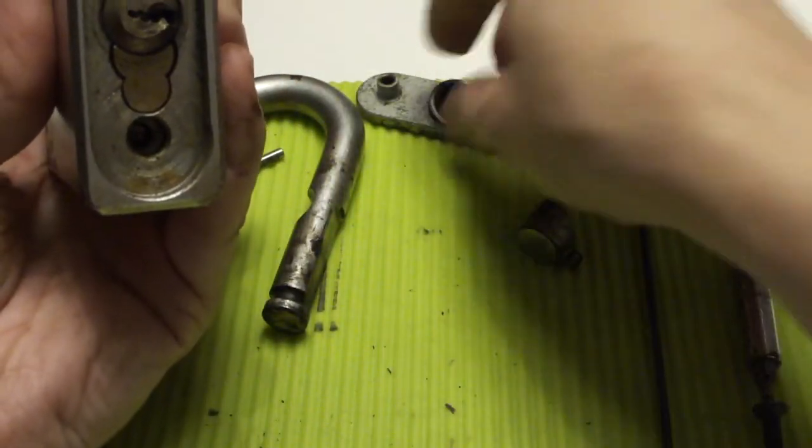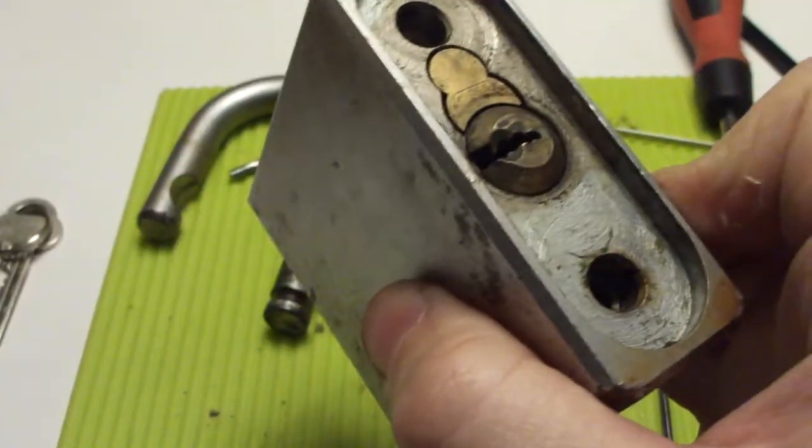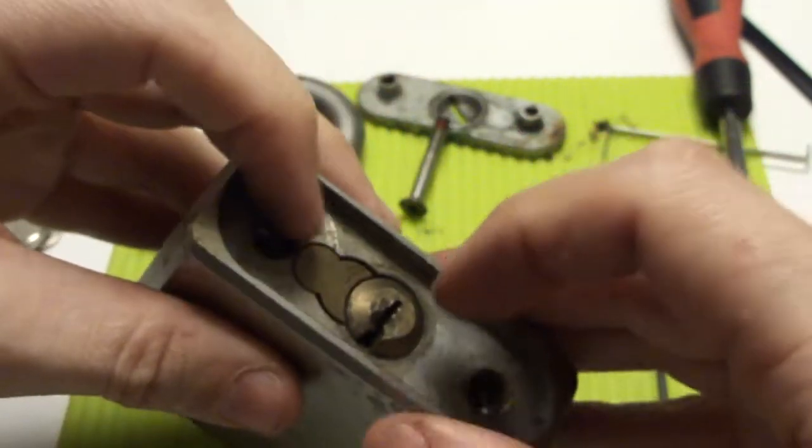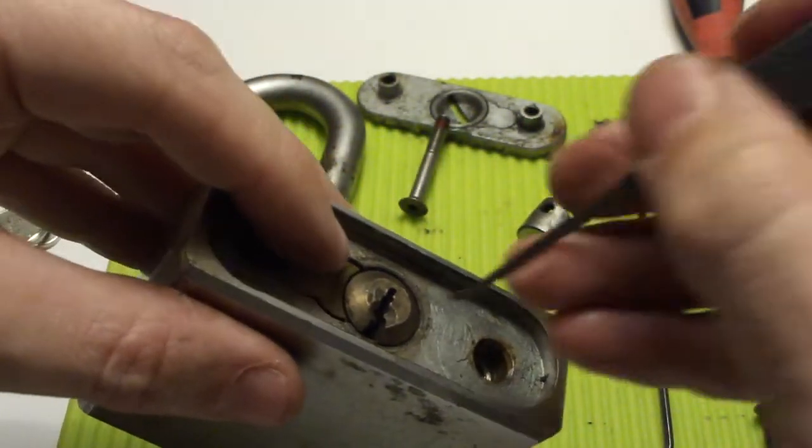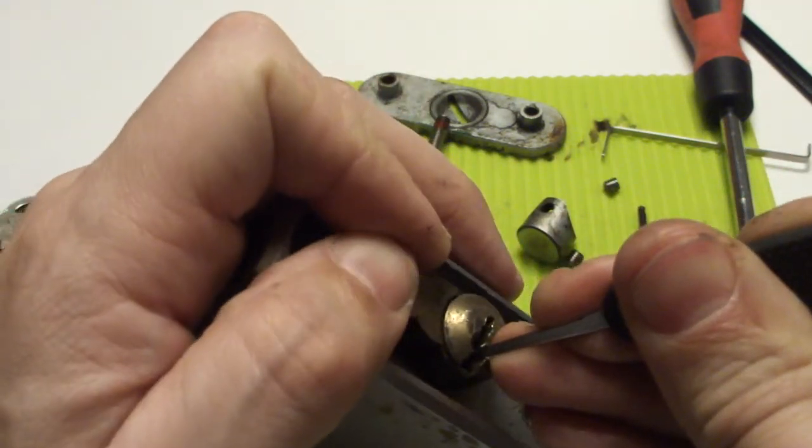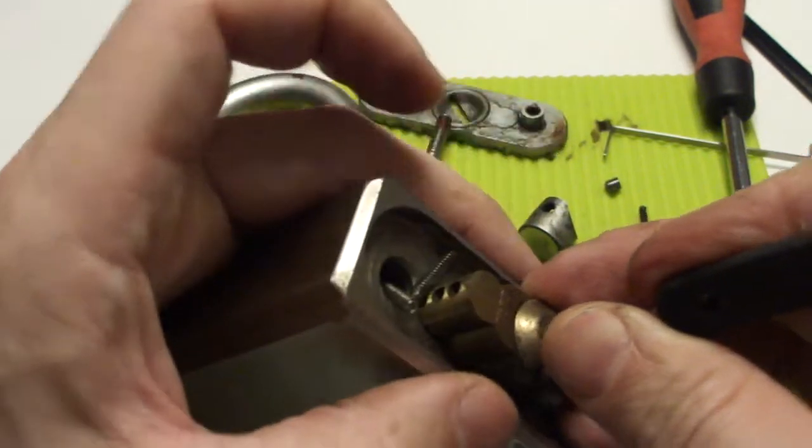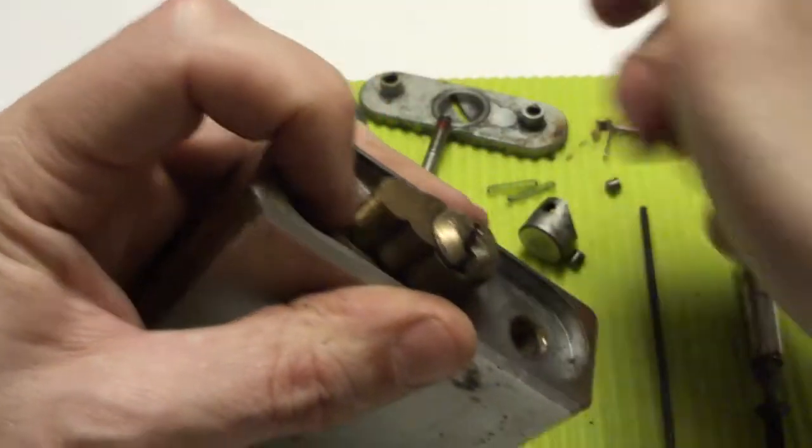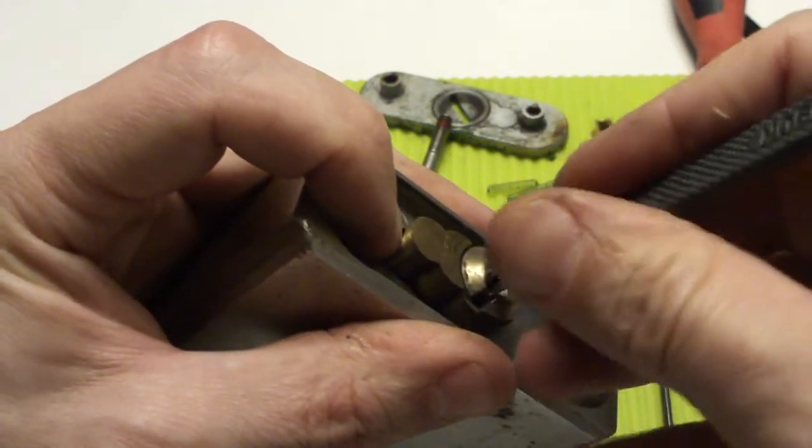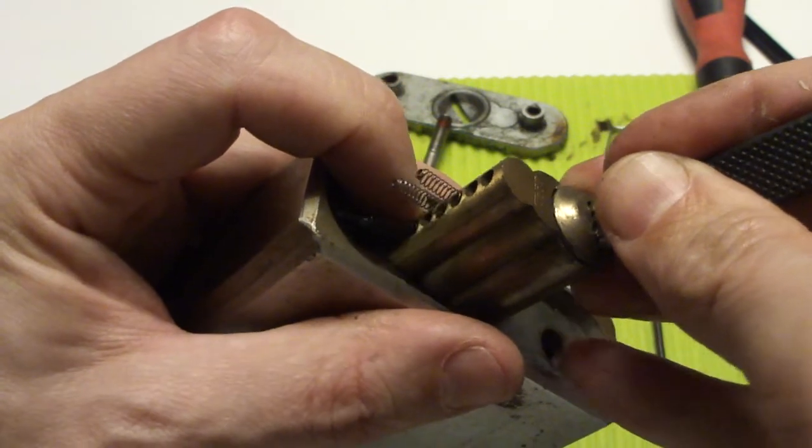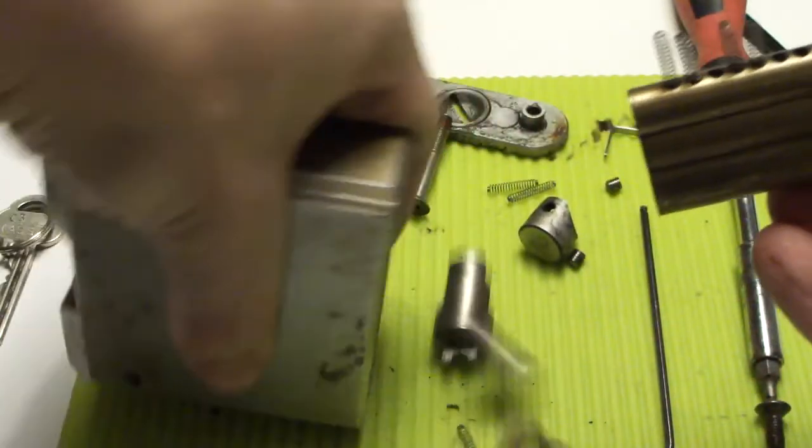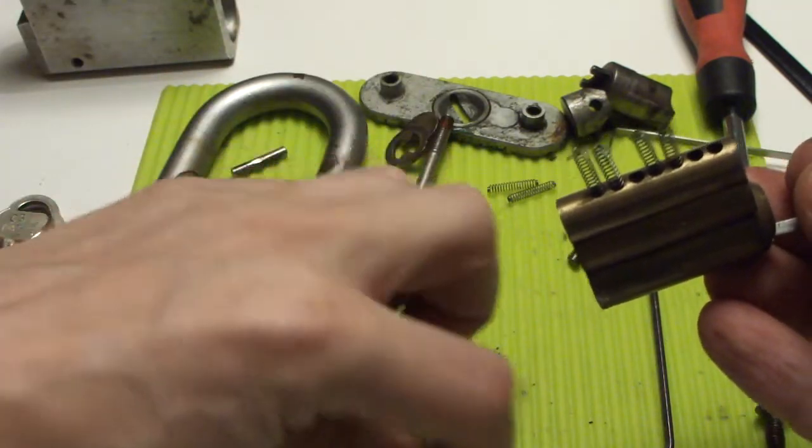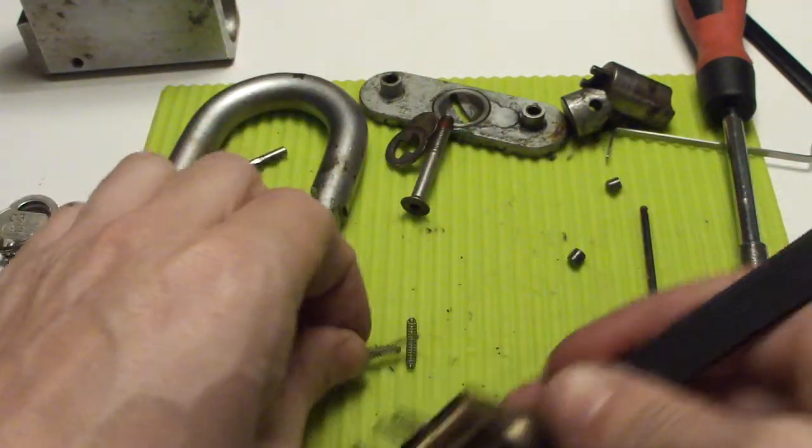There we are. Now the bottom plate will come out. Massive, incredible. And inside we find a brass snowman core.